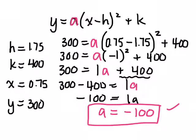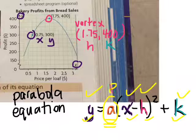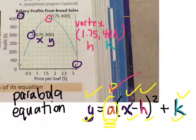So now that we found our a value, let's go back to the question. The question said, determine an equation for this parabola. Now that we know a, we need to replace a, h, and k to write our equation.